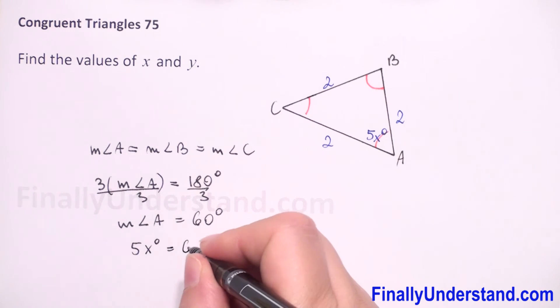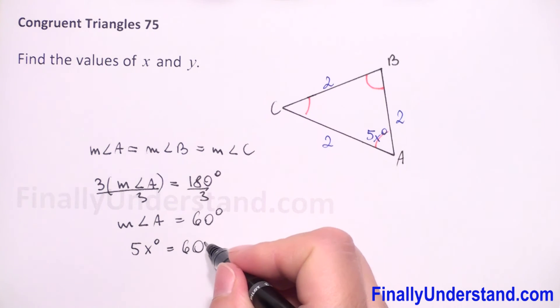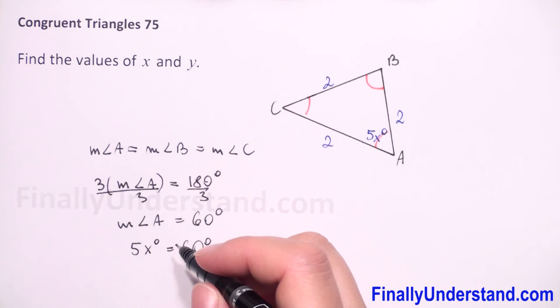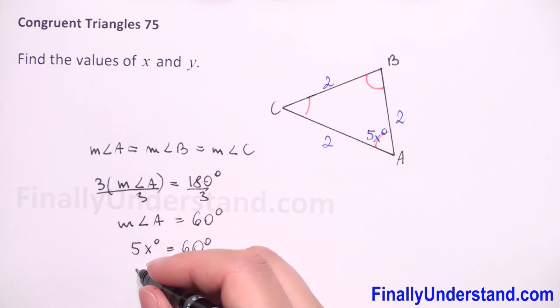So this is equal to 60. We have 5x is equal to 60. We can divide by 5. 5 and 5 we can reduce, and we have x is equal to 12.